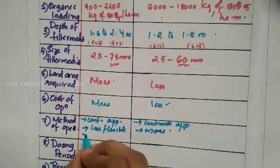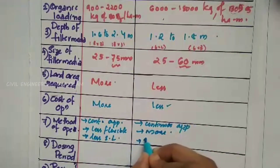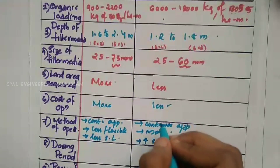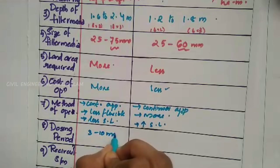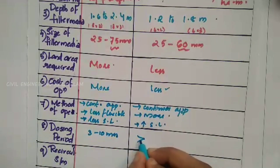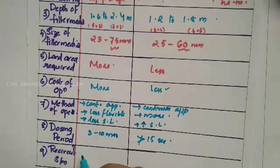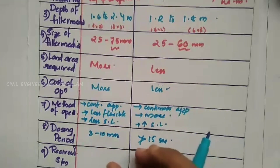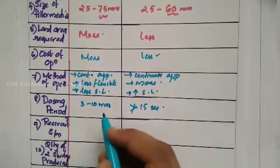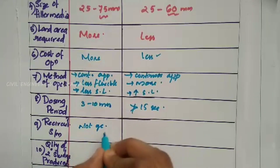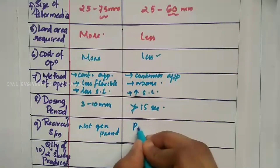Low rate requires less skilled labours. High rate requires more skilled labours. For dosing, low rate is 3 to 10 minutes. High rate is 15 seconds. For the recirculation system, low rate generally does not provide recirculation, while high rate always provides recirculation.